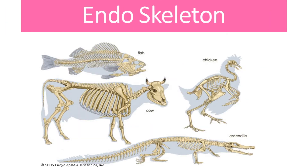The other type is the endoskeleton which is found on the inside of the organism's body. All vertebrates, which include humans as we are mammals, contain an endoskeleton. We will focus on the human skeleton.